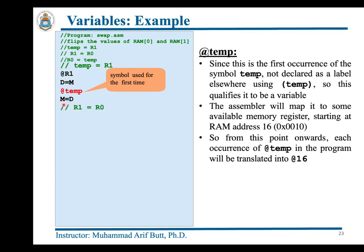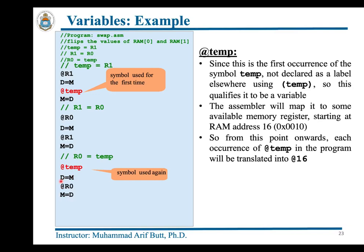Four instructions perform 'R1 = R0', and two instructions read RAM location 16 (since temp points to address 16) placing the value in D, then two more instructions perform 'R0 = temp'. Three instructions in blue show the program termination loop. I hope the Hack assembly program and the use of variable 'temp' makes sense. If not, please rewind this part.